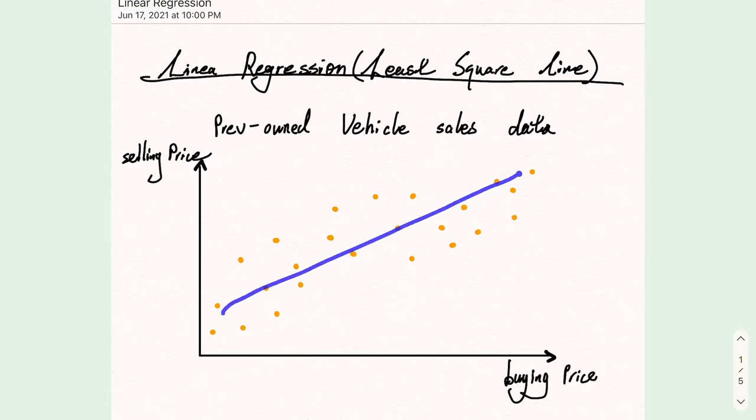For example, we can draw a graph like this, we can draw a graph like that. So, the problem becomes what is the best one, or we call it the best fit line.